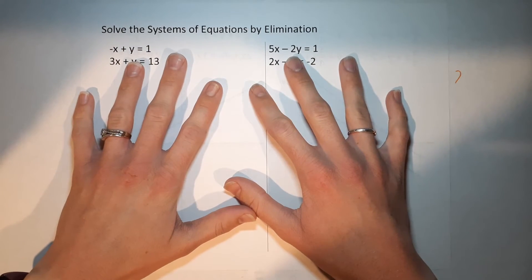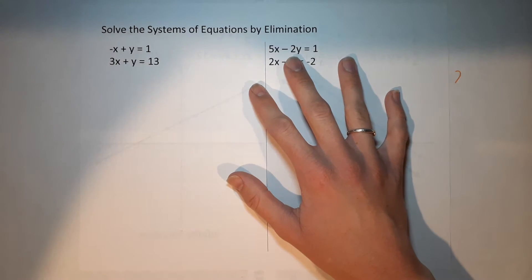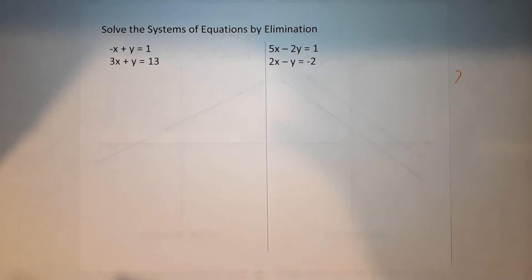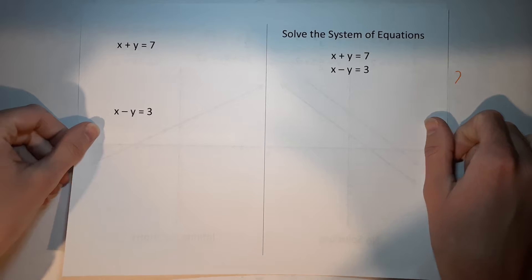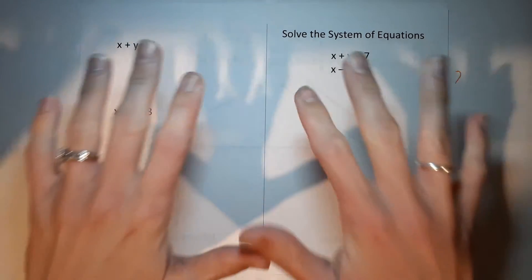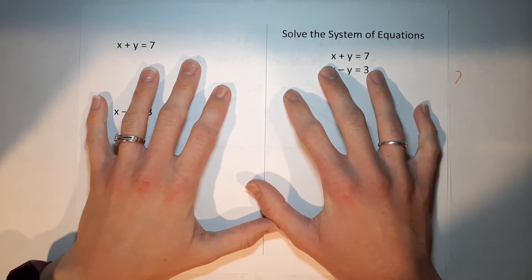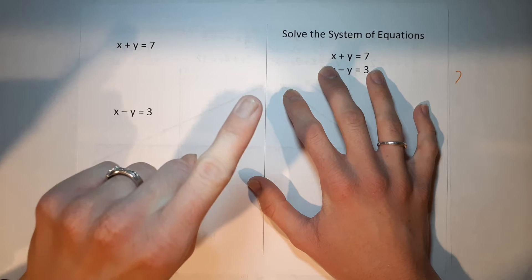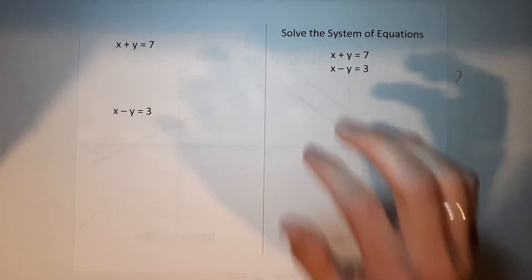Okay, let's get started. Elimination — fastest, easiest, favorite way. Really fast before we get started, I want to explain what systems of equations means. Don't change the video, it'll be fast — stay with me.